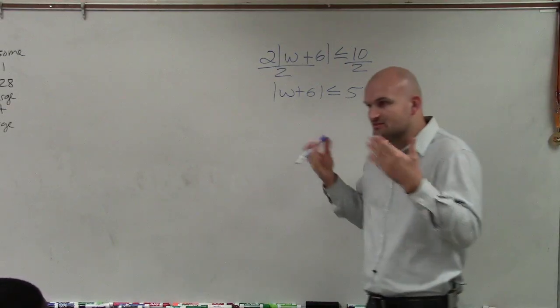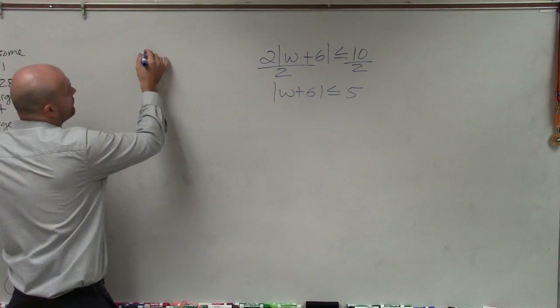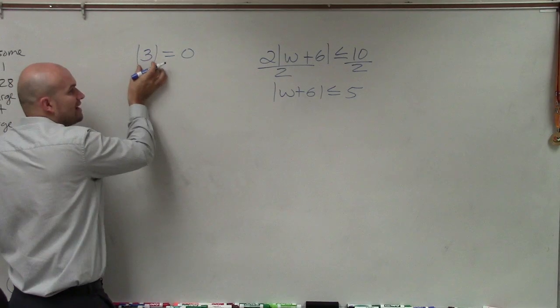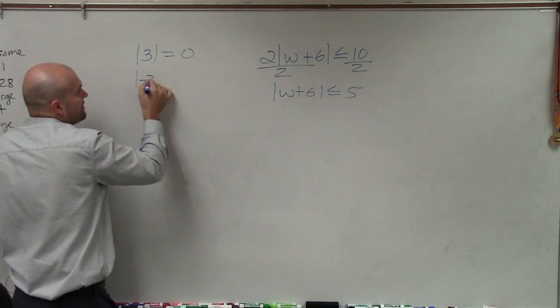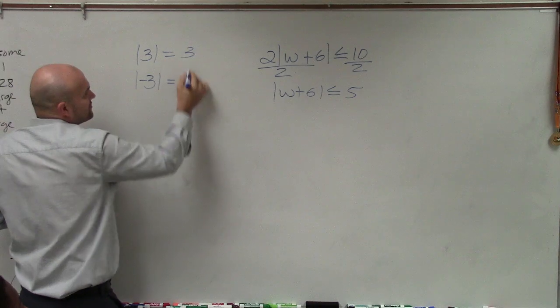Then the next thing we talked about is what exactly does the absolute value mean, represent, and so forth? Well, remember, the absolute value is the absolute distance from 0. So the absolute value of 3 is 3. Absolute value of negative 3 is equal to 3 as well.